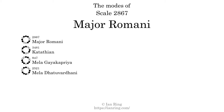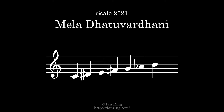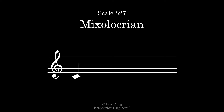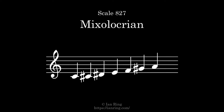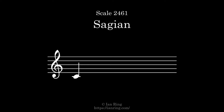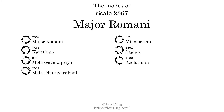The fourth mode is scale 2521, also known as Mila Datavadhani. The fifth mode is scale 827, also known as Mixolocrian. The sixth mode is scale 2461, also known as Sajan. The seventh mode is scale 1639, also known as Eolothian.